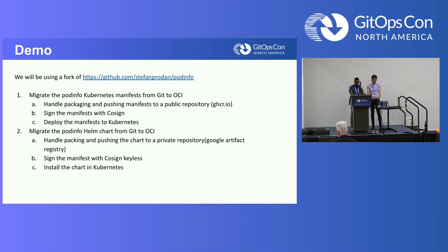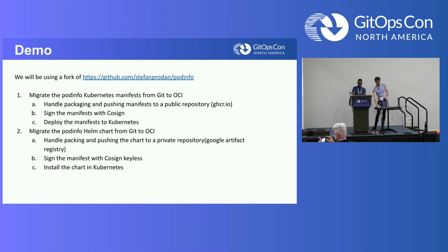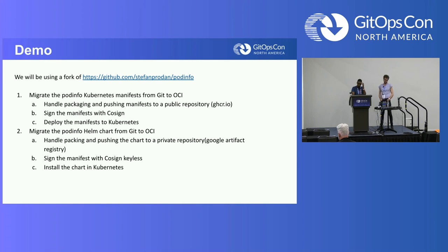For the demo, we have two scenarios using a fork of the pod info project. The first is migrating Kubernetes manifests from Git to OCI - we'll package and push the manifests to GitHub Container Registry, sign with Cosign, and deploy to Kubernetes. The second scenario does the same thing but using the provided Helm chart, migrating it to OCI - packaging, signing, and deploying to Kubernetes.